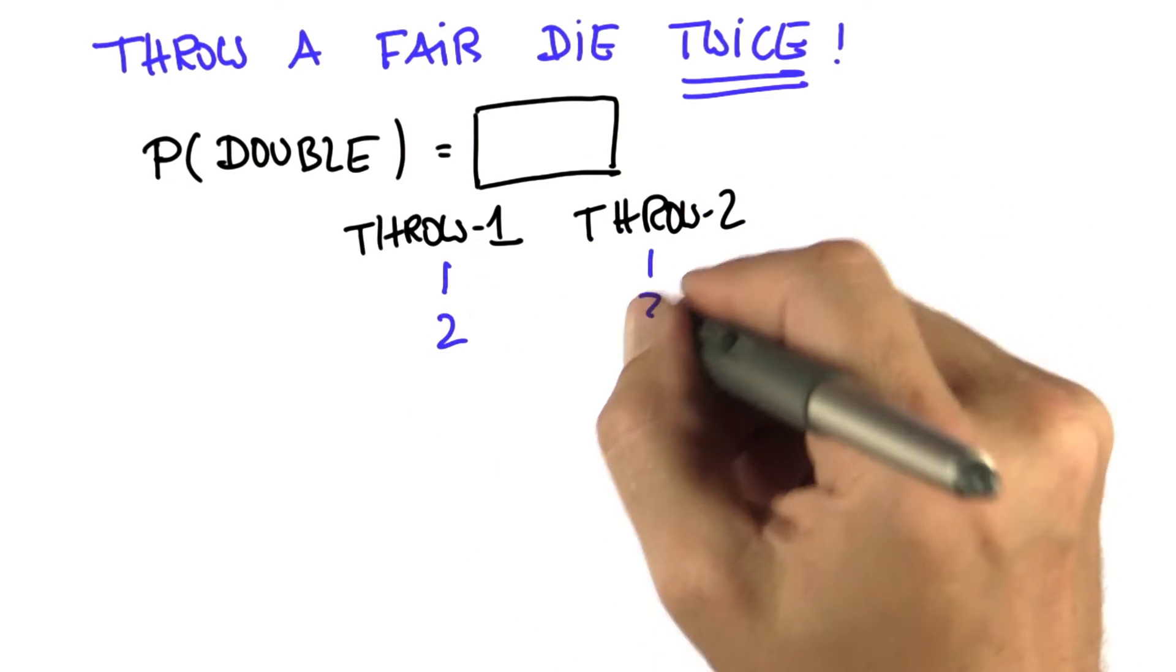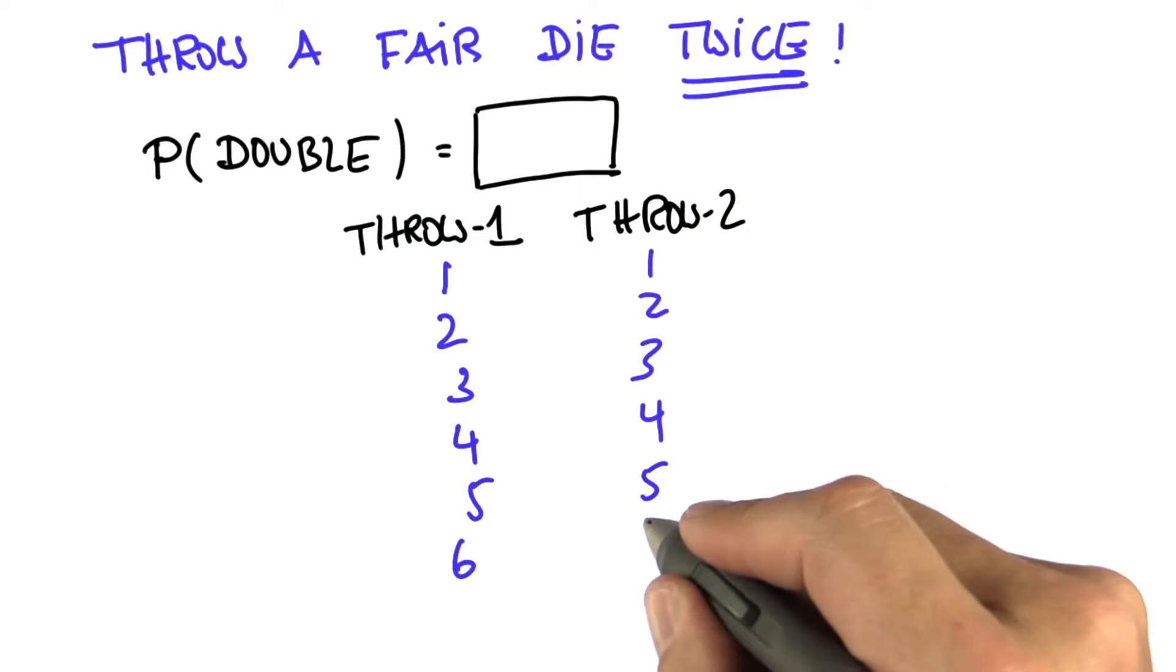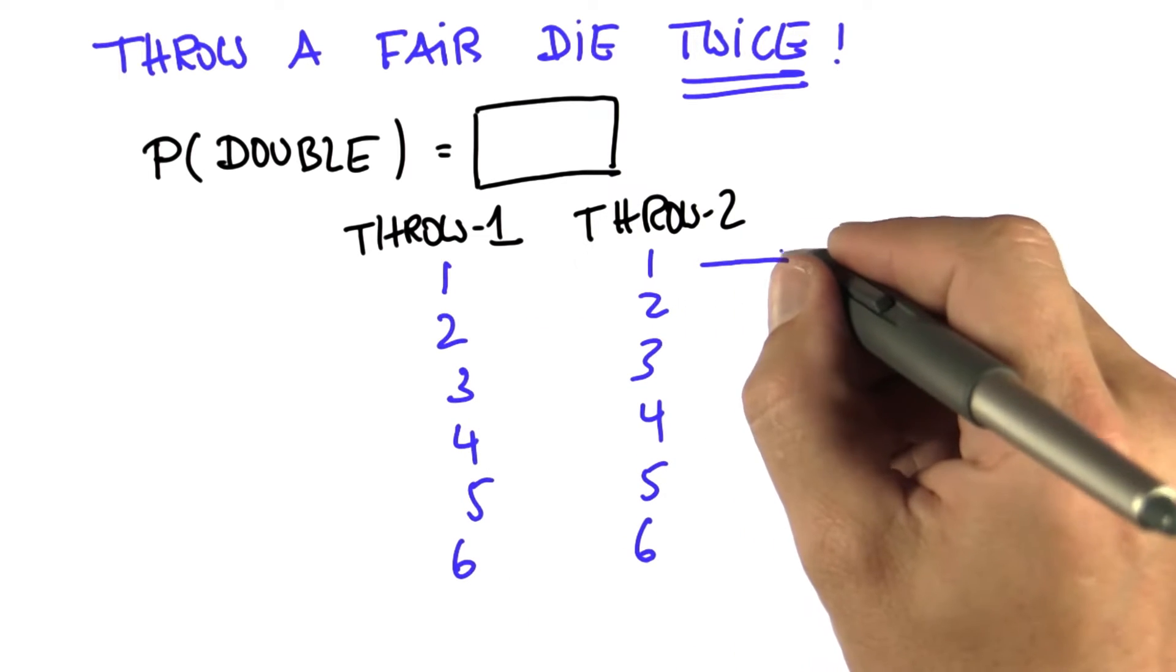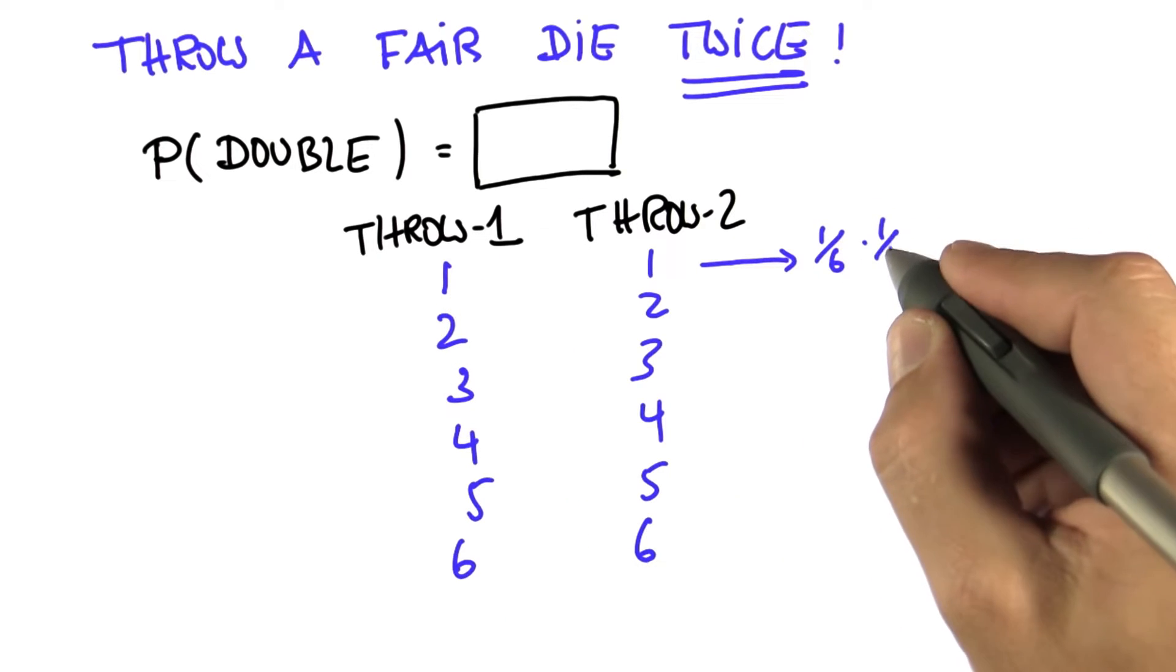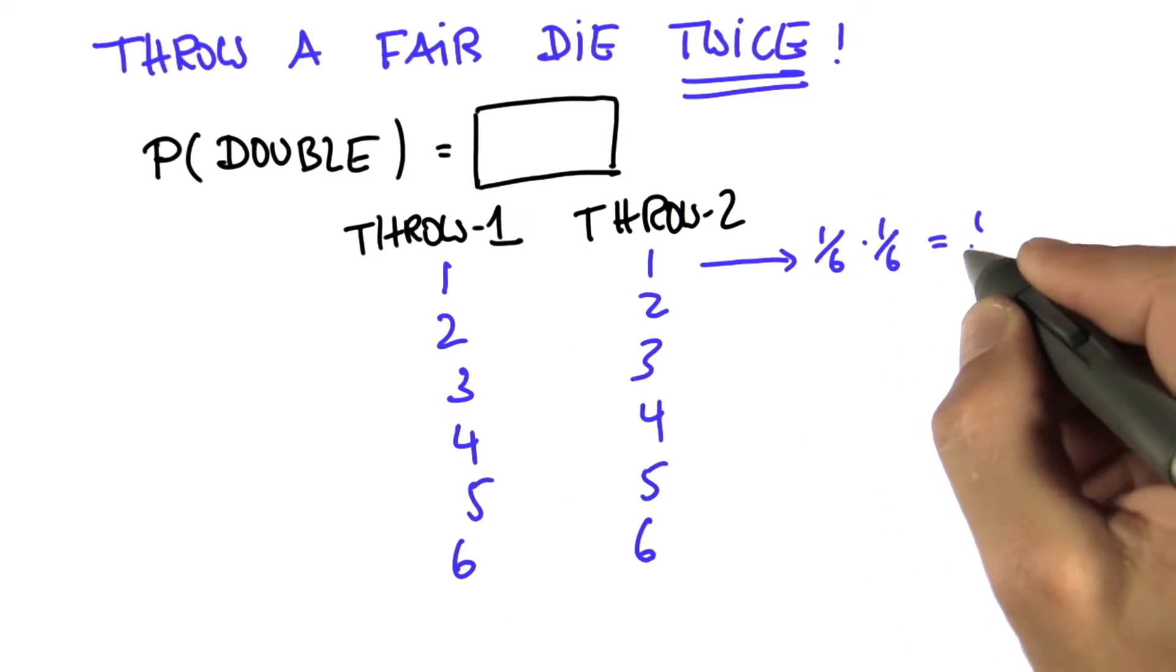1, 1, 2, 2, and so on all the way to 6, 6. So each one of those has a probability of 1/6 for the first outcome times 1/6 for the second, which gives me 1/36.